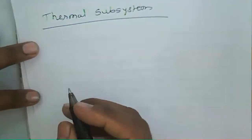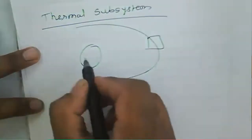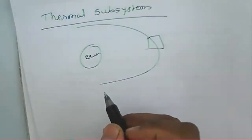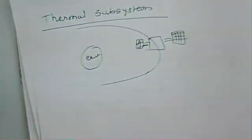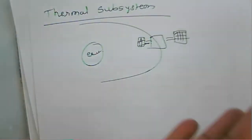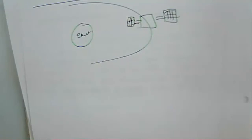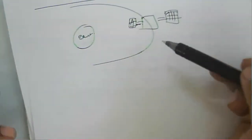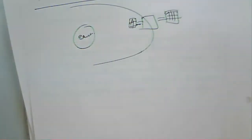The thermal subsystem addresses what happens when the satellite rotates around the earth. The solar panels on the satellite experience pressure, and the portion of the satellite facing the sun experiences significant temperature variation. The parts facing the sun get heated more, experiencing a large body temperature, while the back side of the satellite experiences cold.